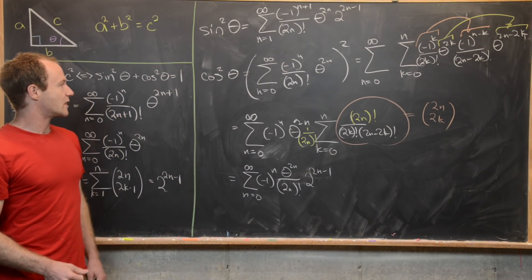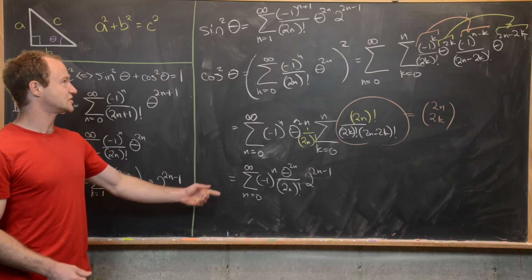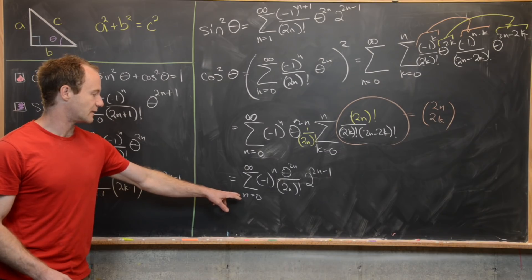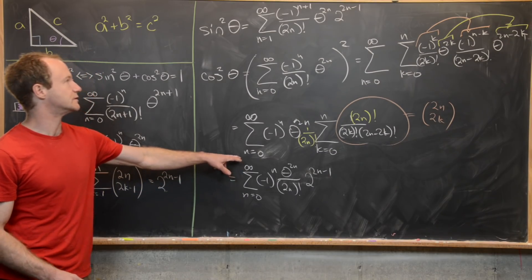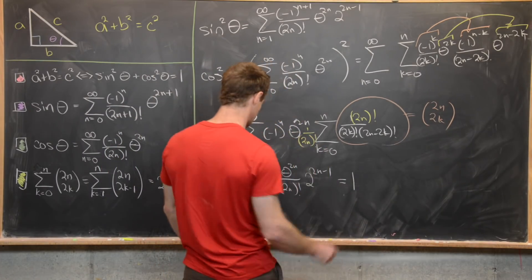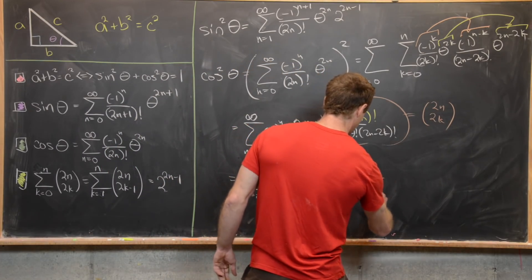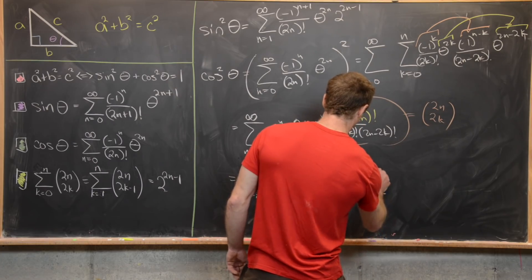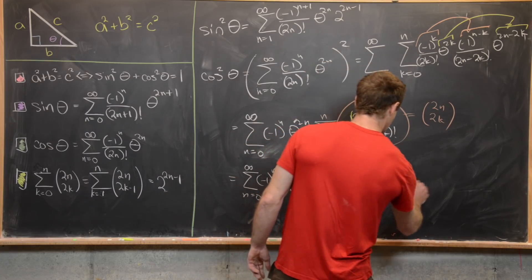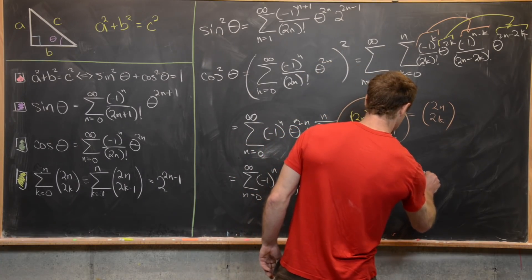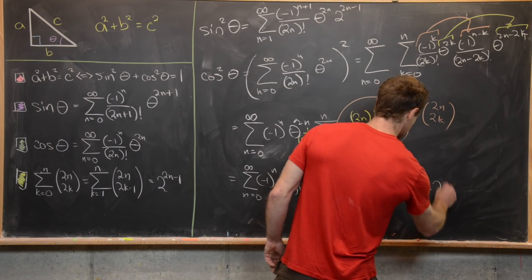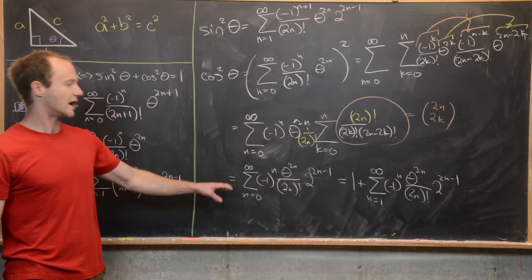Now extract the first term (n equals zero): that term equals one, since minus one to the zero times theta to zero over zero factorial times two to the negative one — wait, at n equals zero, two to the two times zero minus one is two to the negative one... Actually the first term evaluates to one. So cosine squared equals one plus the sum as n goes from one to infinity of minus one to the n times theta to the two n over two n factorial times two to the two n minus one.